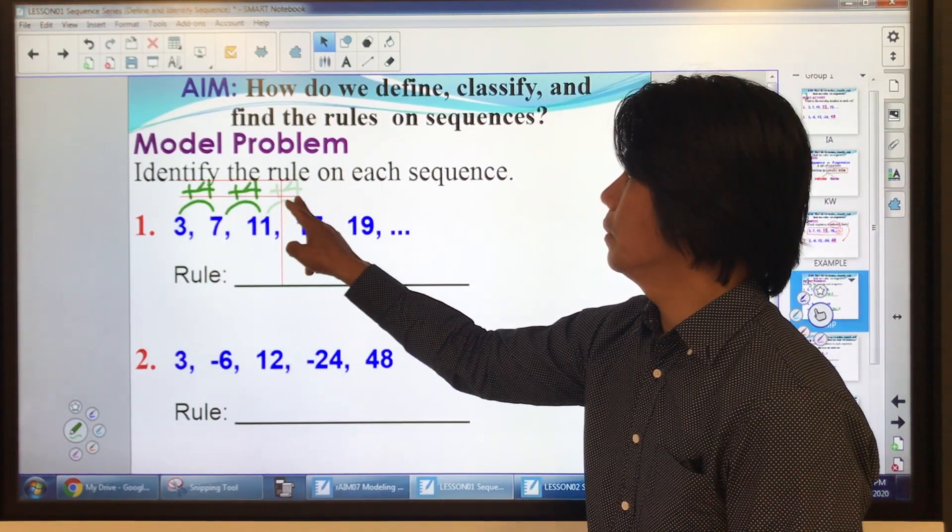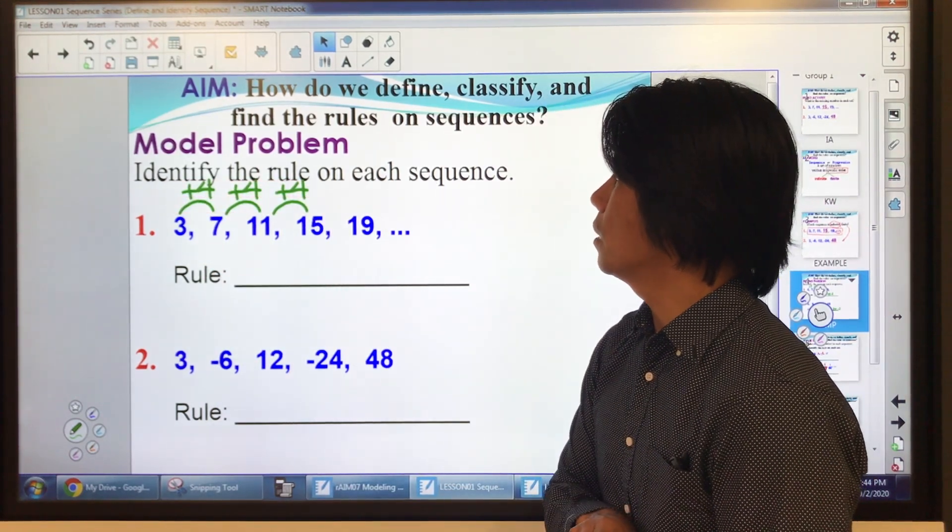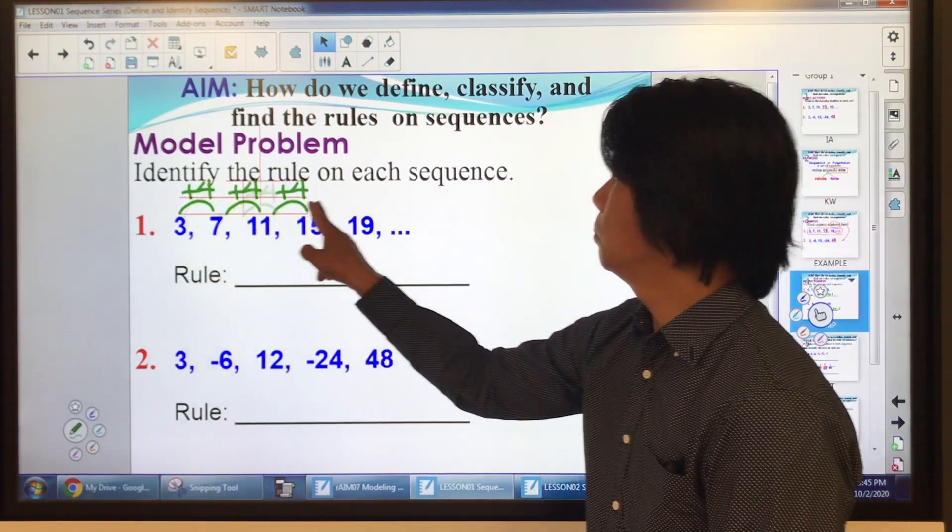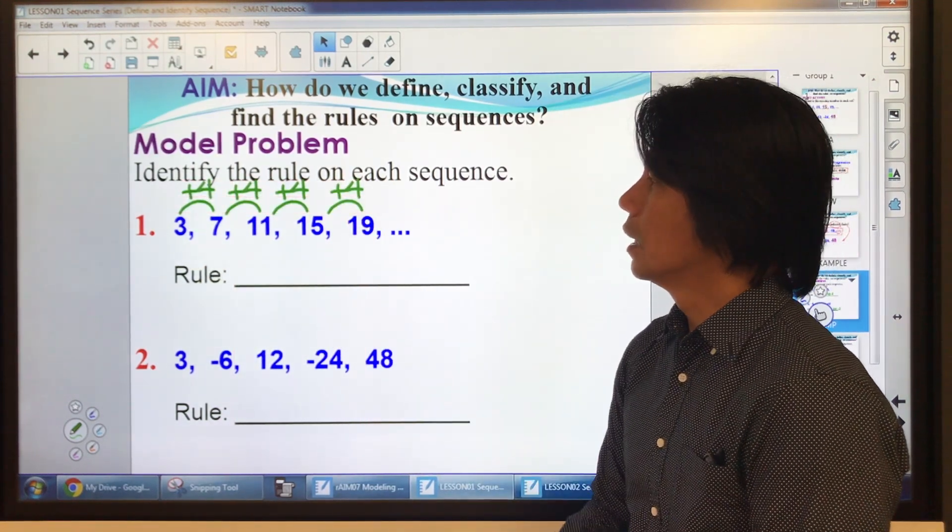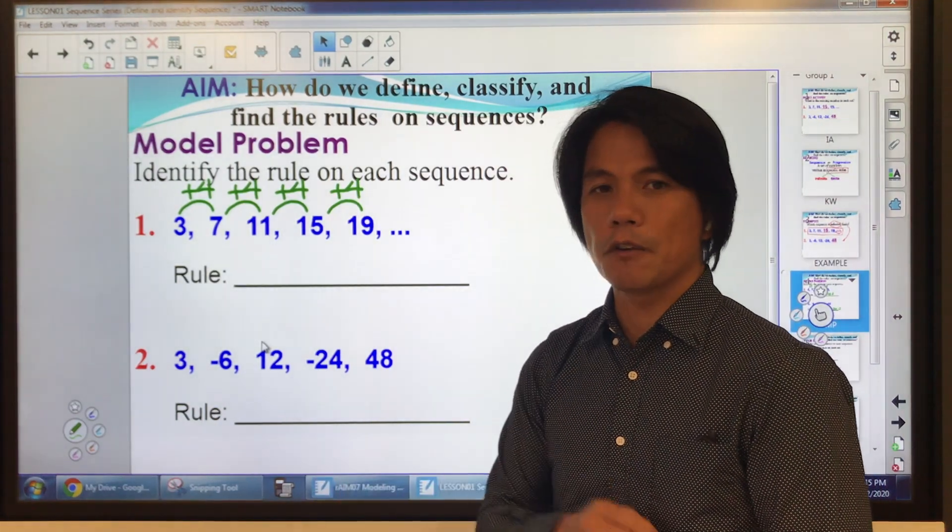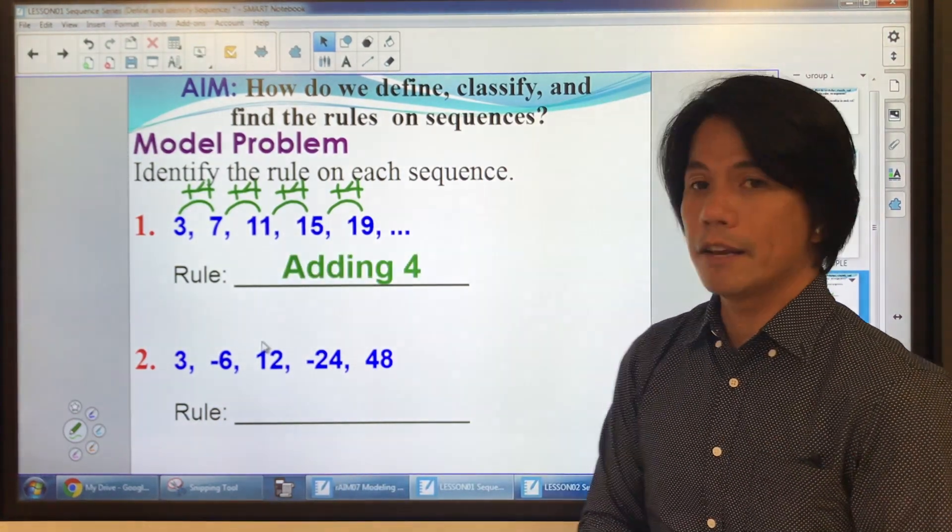Seven plus four is 11. Good. So far, 11 plus four is 15. Plus four is 19. So therefore, what is the pattern? What is the specific order? Remember, we're adding four.